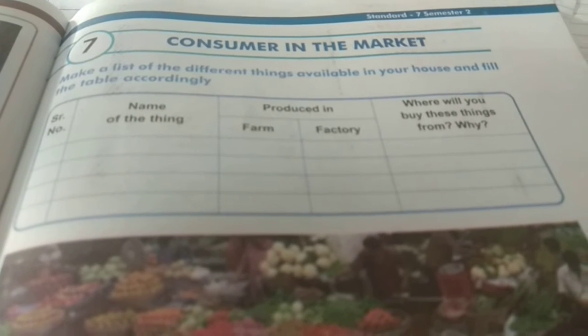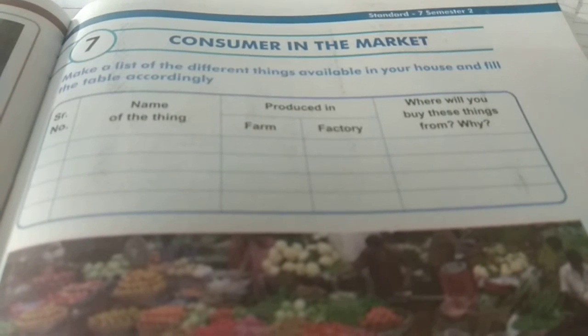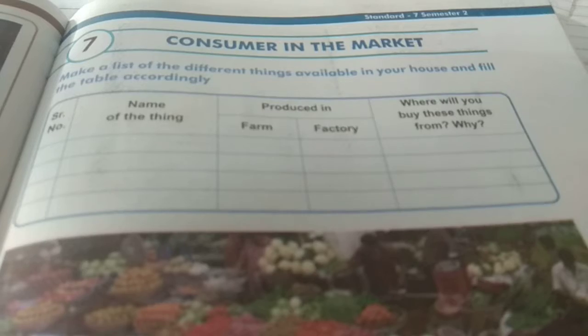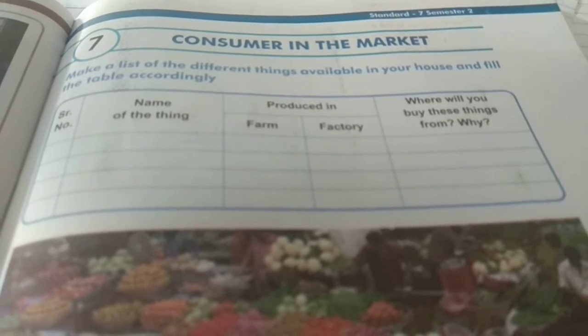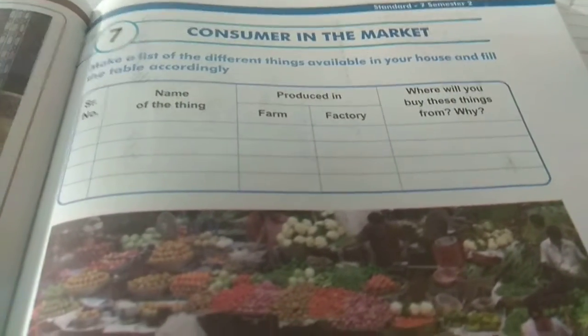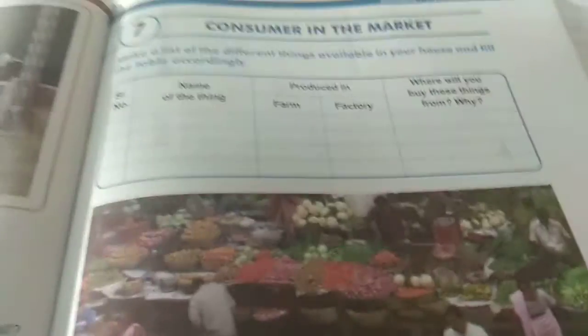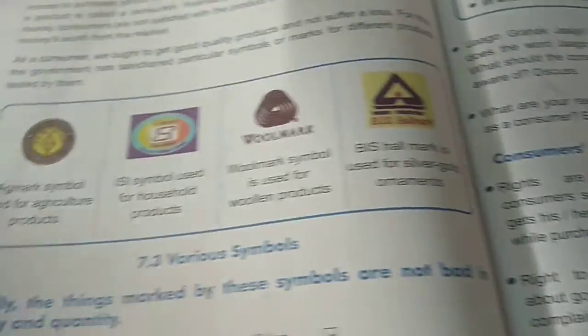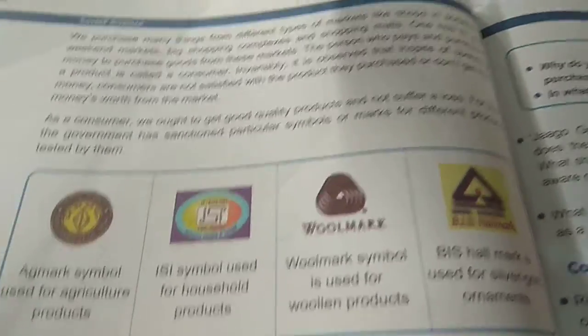Good morning students. Let us continue our class with chapter number 7, Consumer in the Market. In this chapter we will understand what are the rights of a consumer, where the consumer buys all the products, what the markets are, and what are our responsibilities as a consumer.